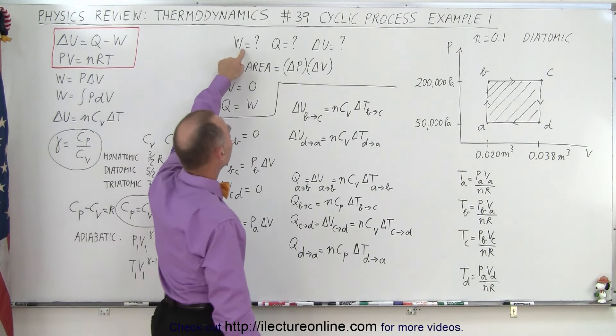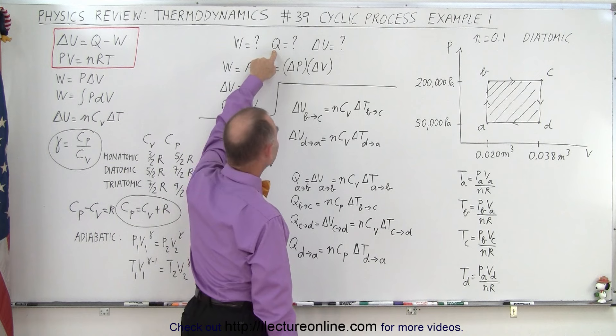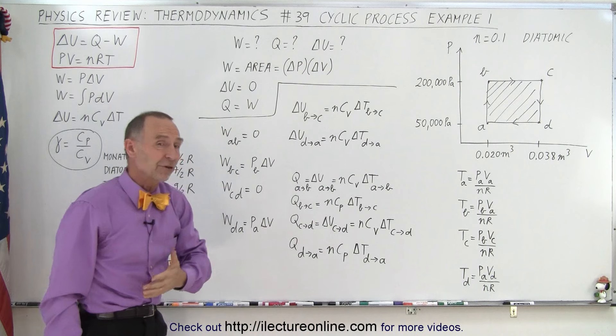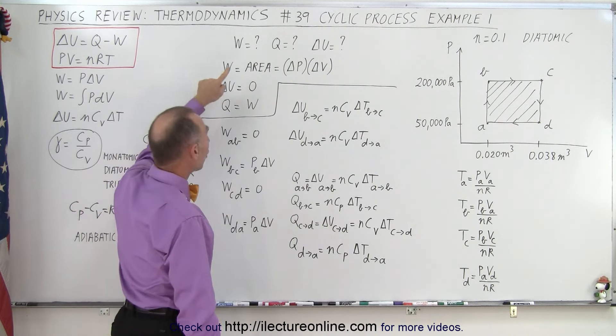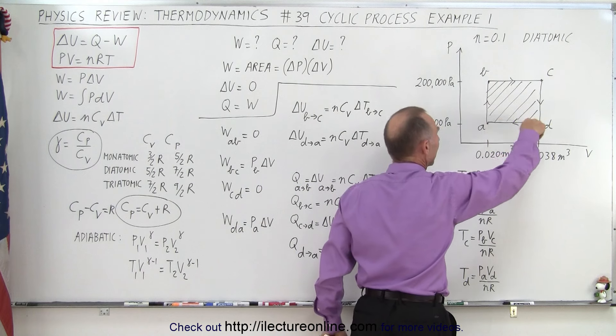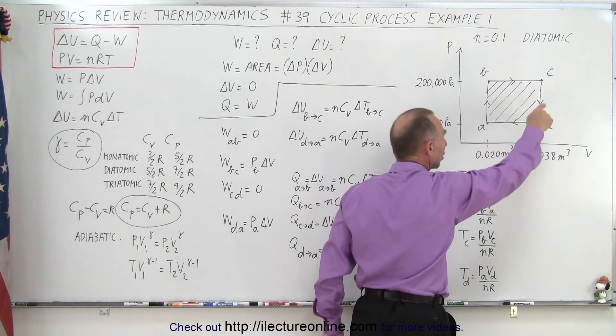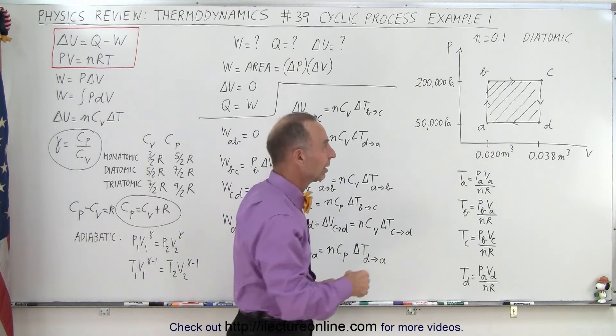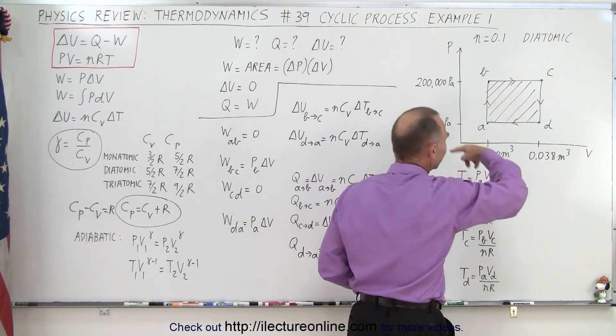When we're looking for work done in the cycle, the amount of heat added to the gas, and the change in internal energy, it's fairly straightforward. The work done is always going to be the area inside the cycle. Now presumably, we're going in a clockwise direction, which means we're doing positive work. The gas is doing work.